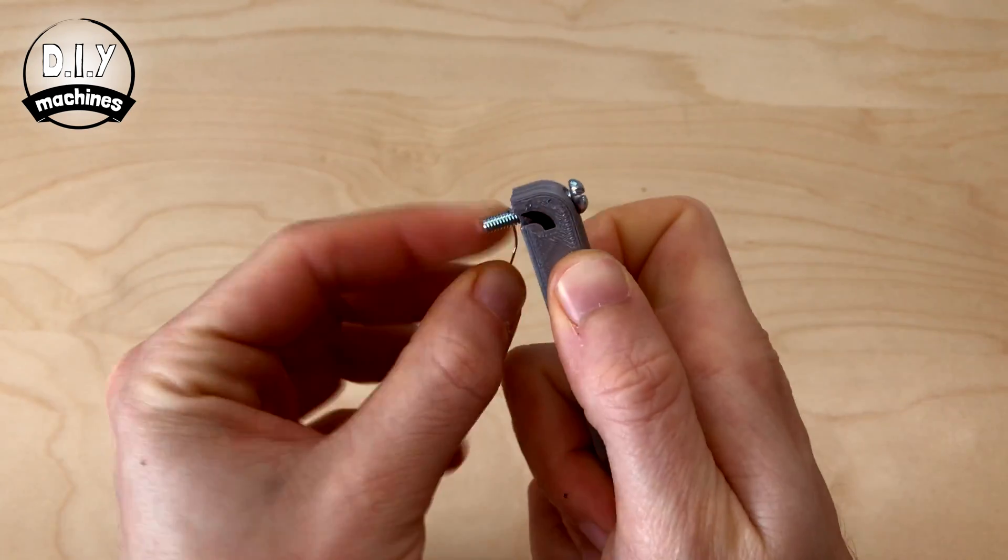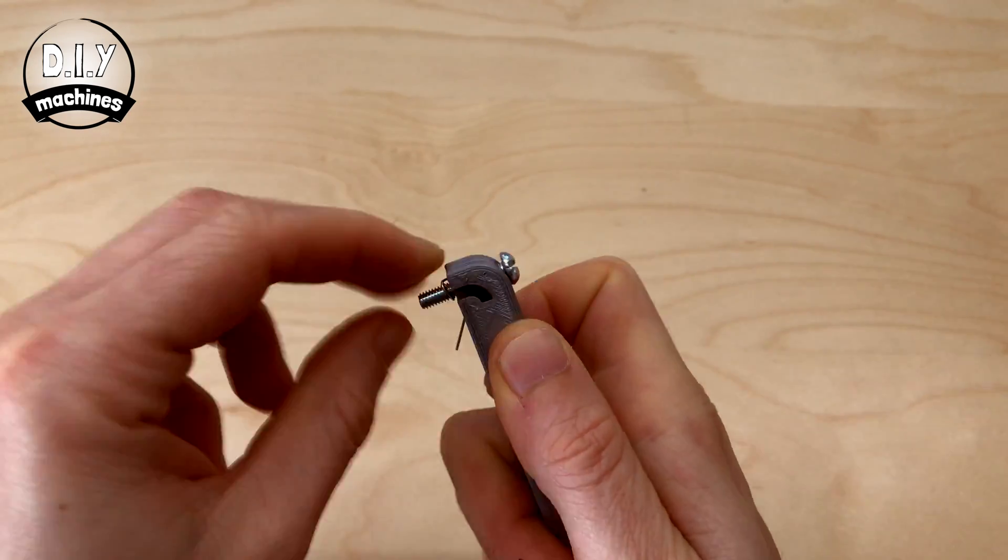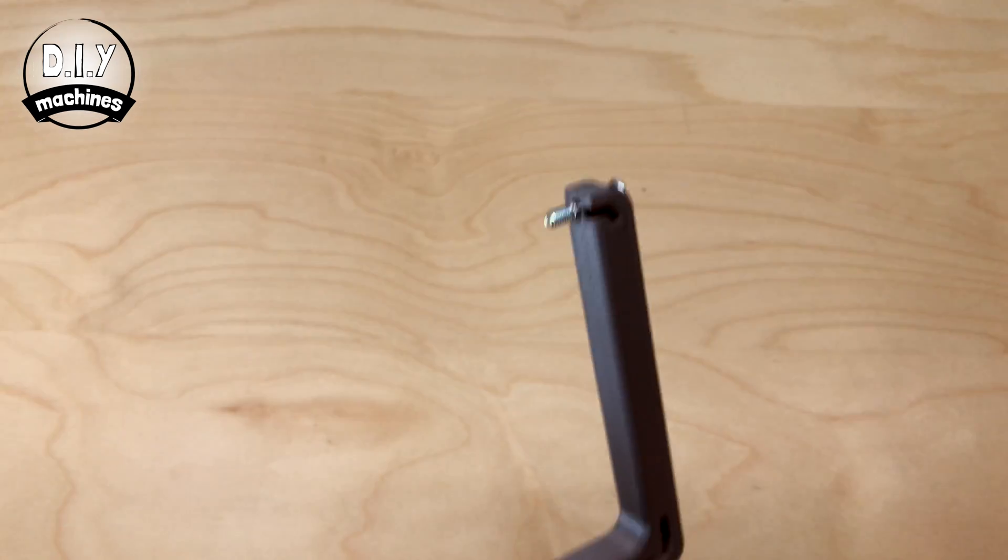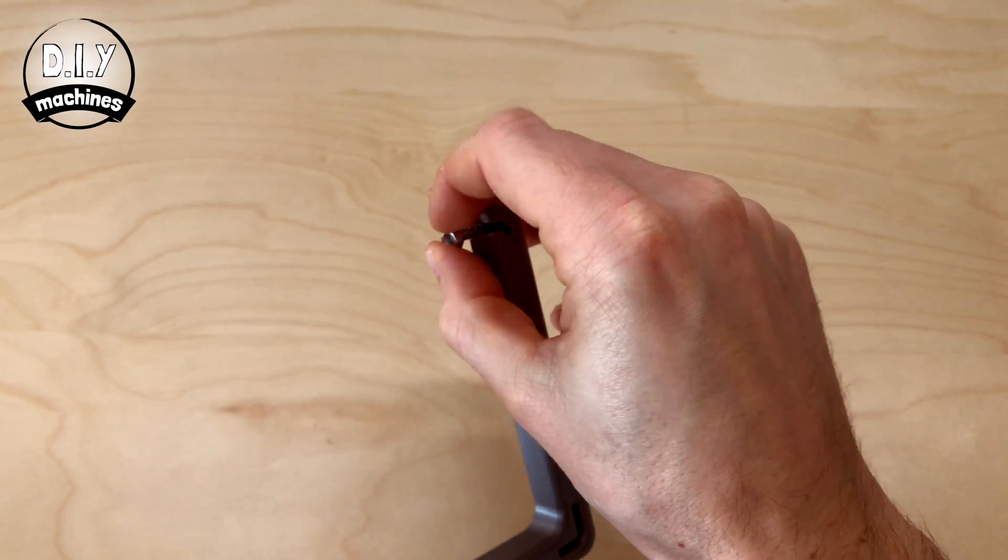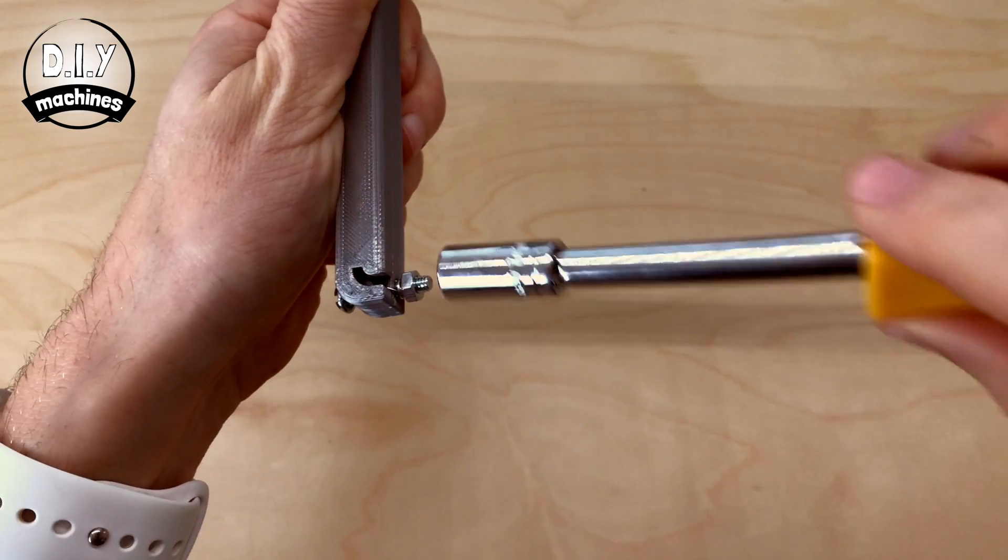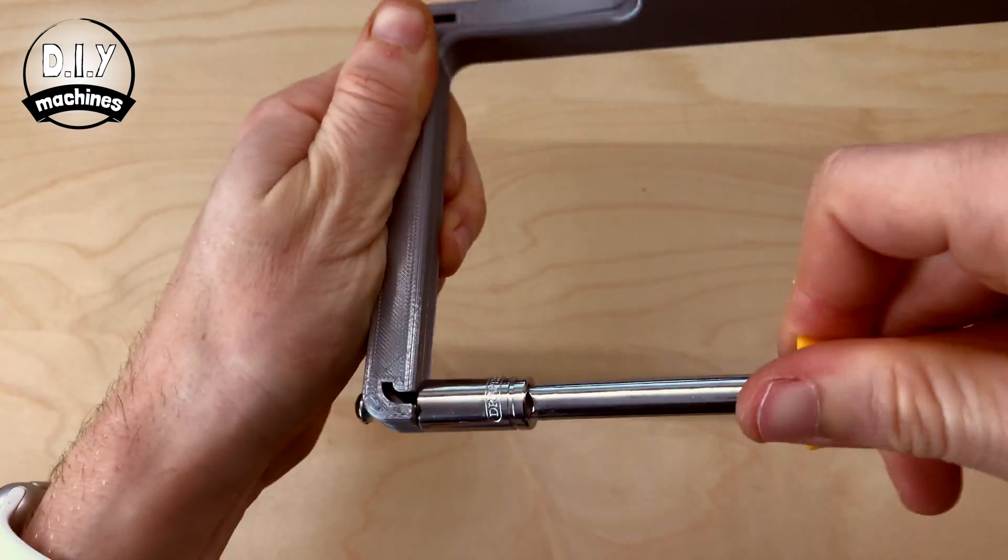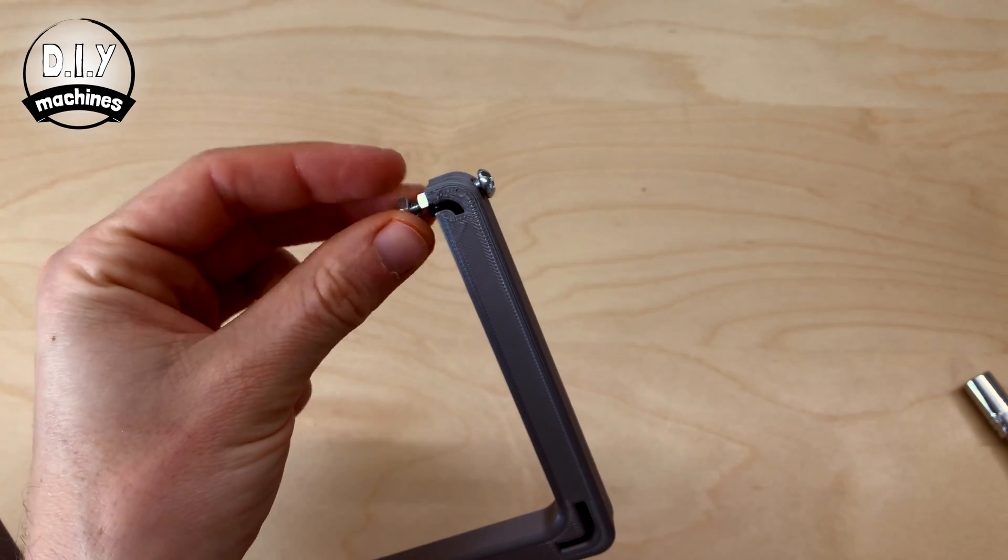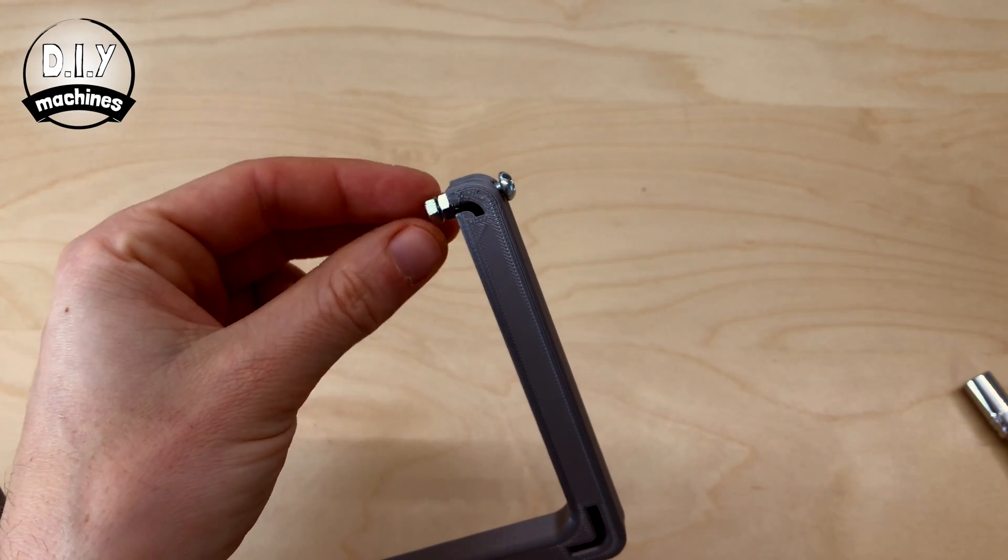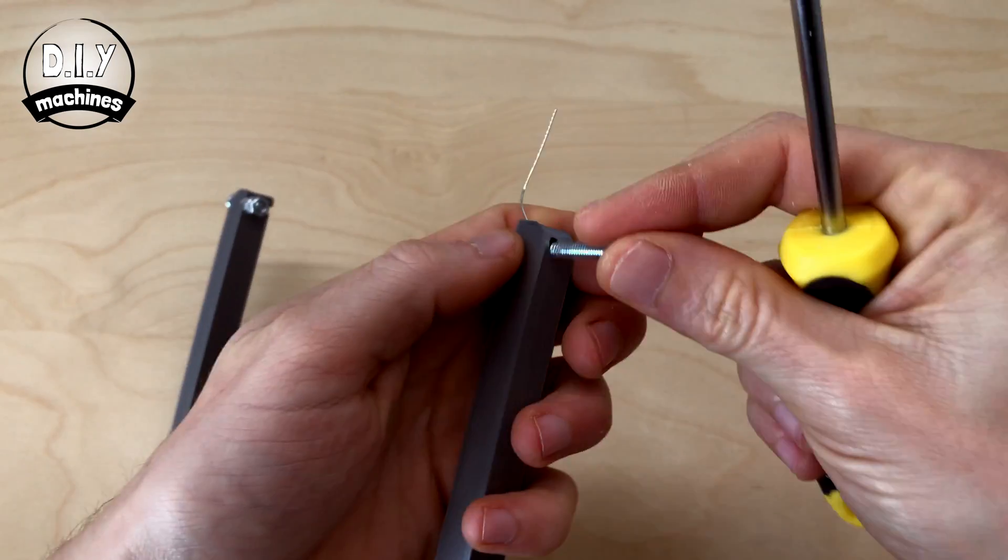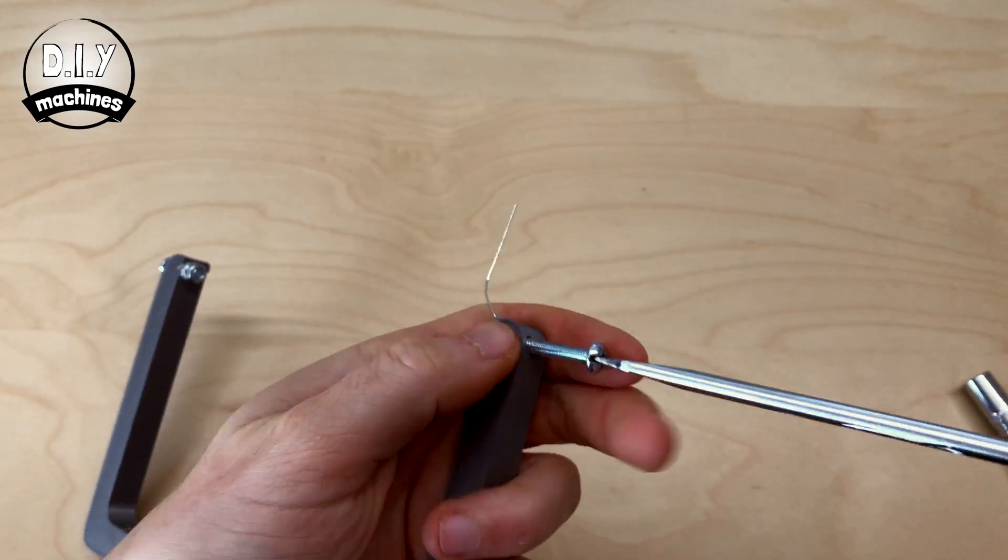Wrap the exposed end of the wire around the bolt. The second nut only needs to be done loosely for the time being. Repeat the same steps with two nuts and a bolt to attach this wire to the other side.